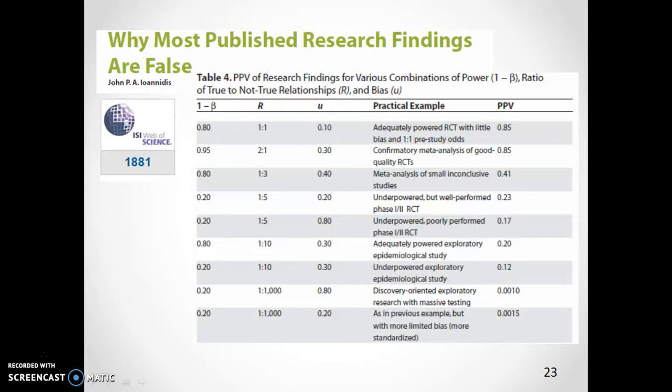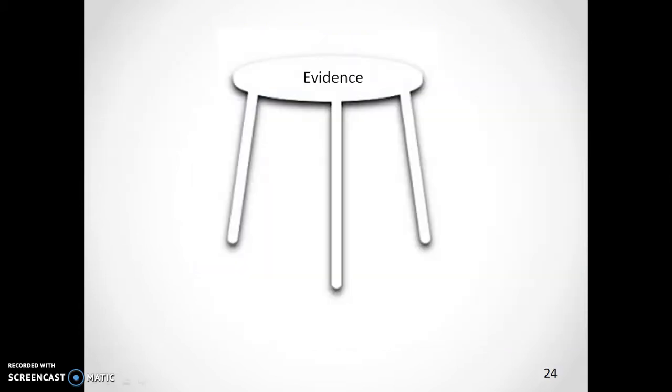Ioannidis warned us about the difference between p-values and this interpretation. Let us follow his methodology and repeat that evidence is supported by three legs: a previous and good foundation, the power of the study, and a small p-value.